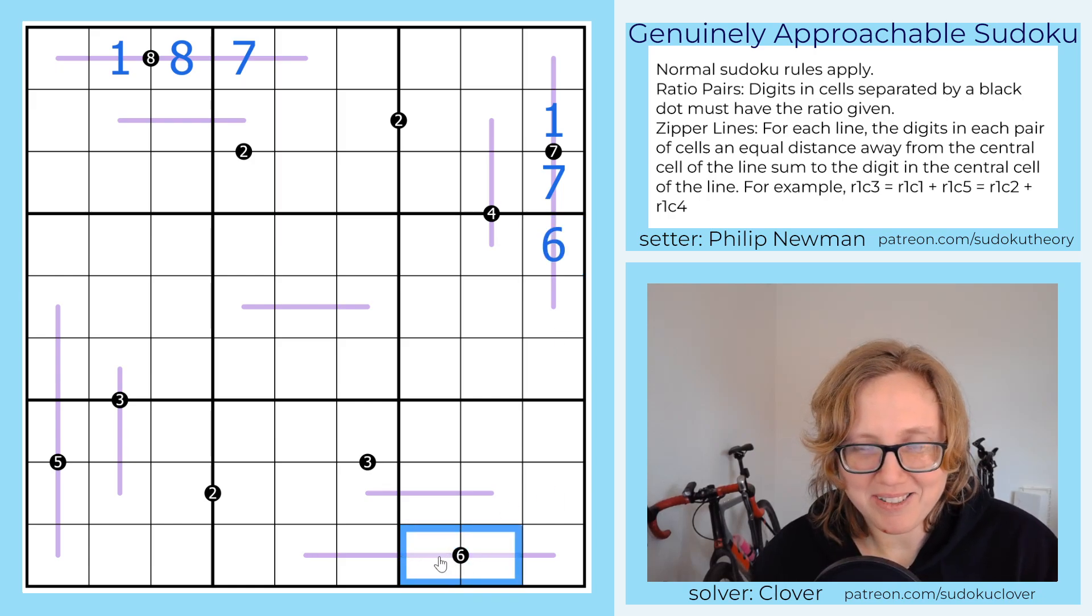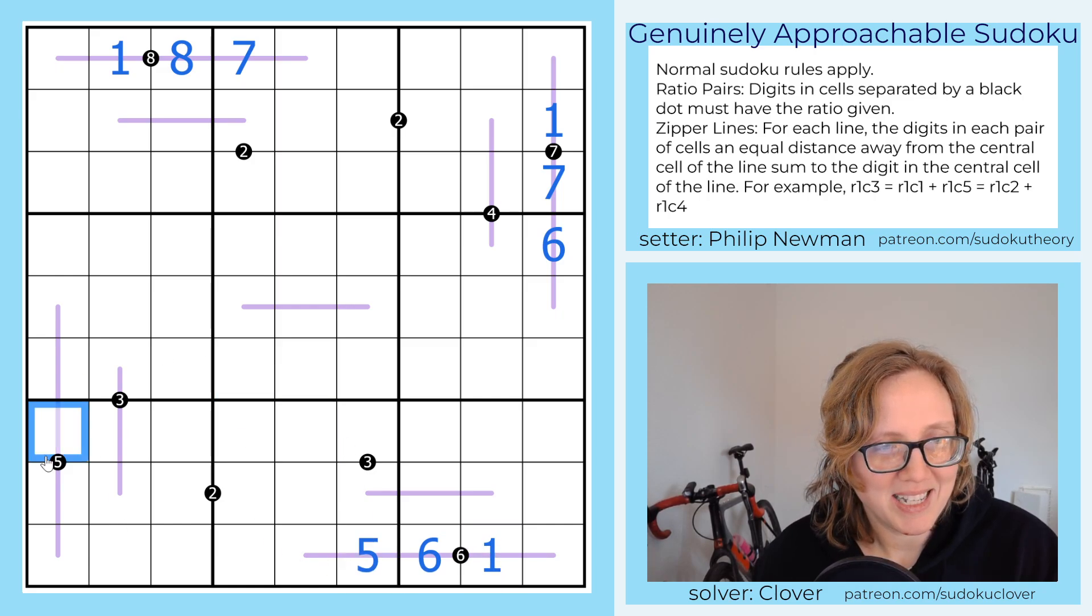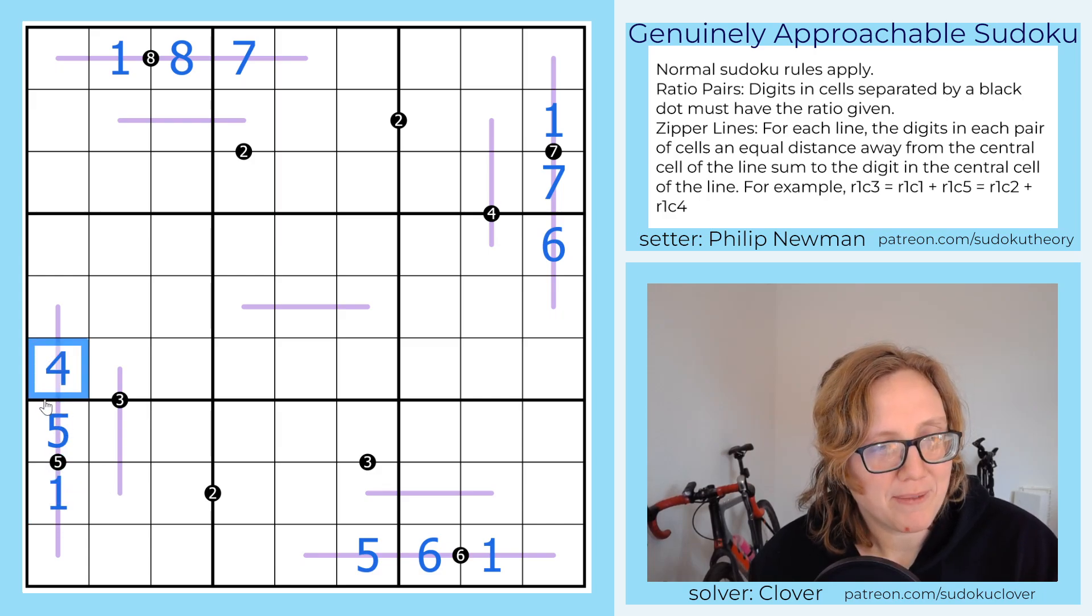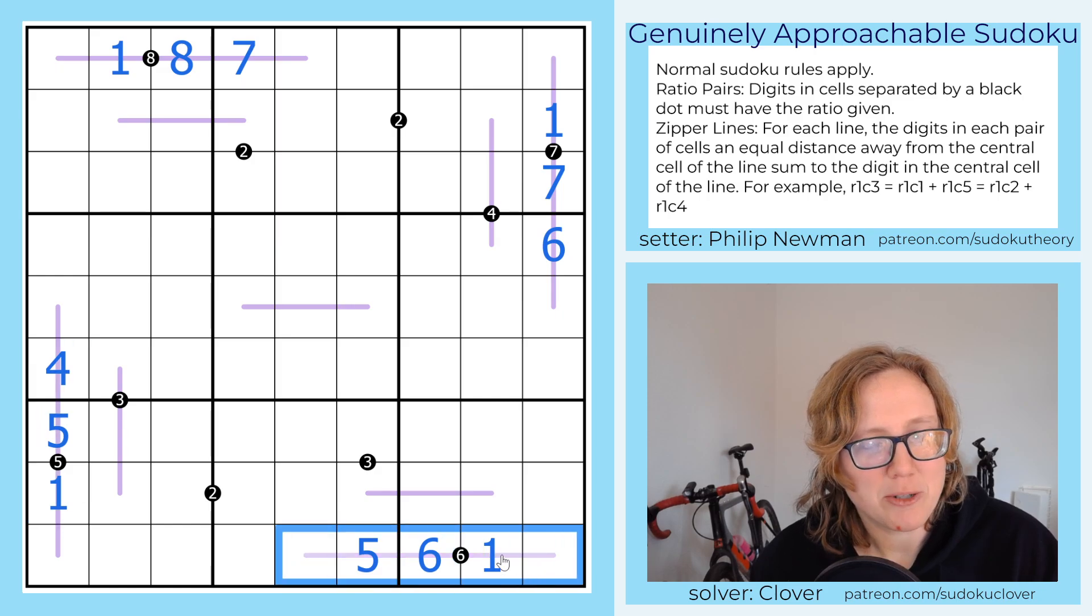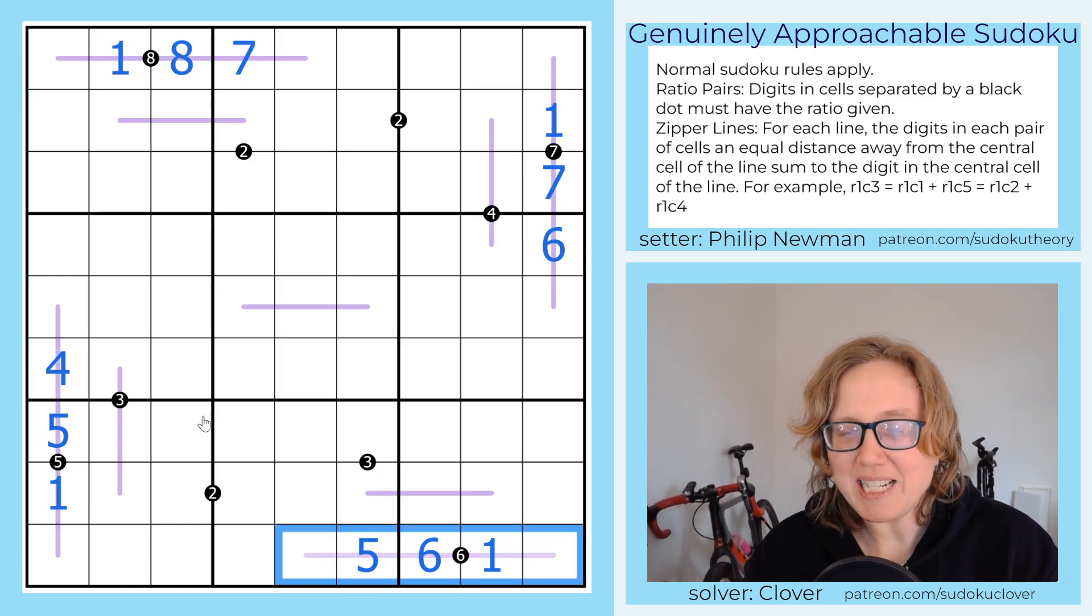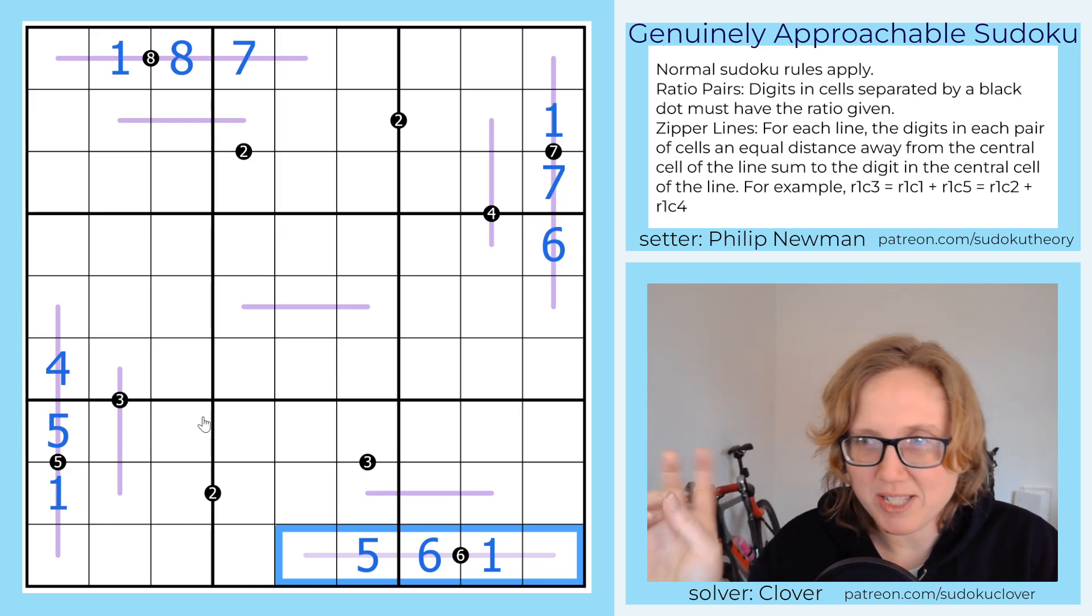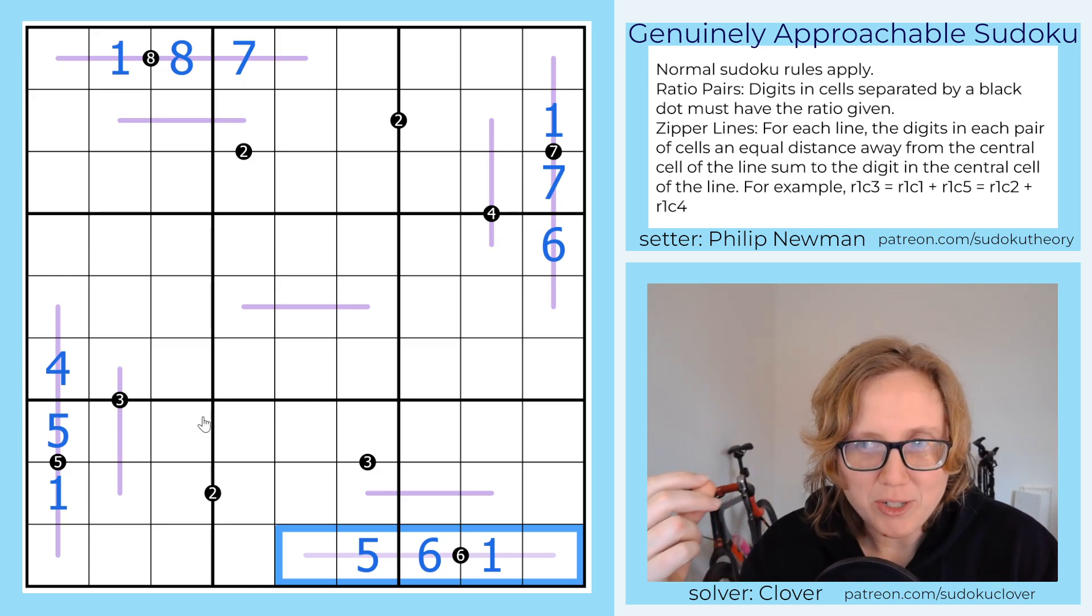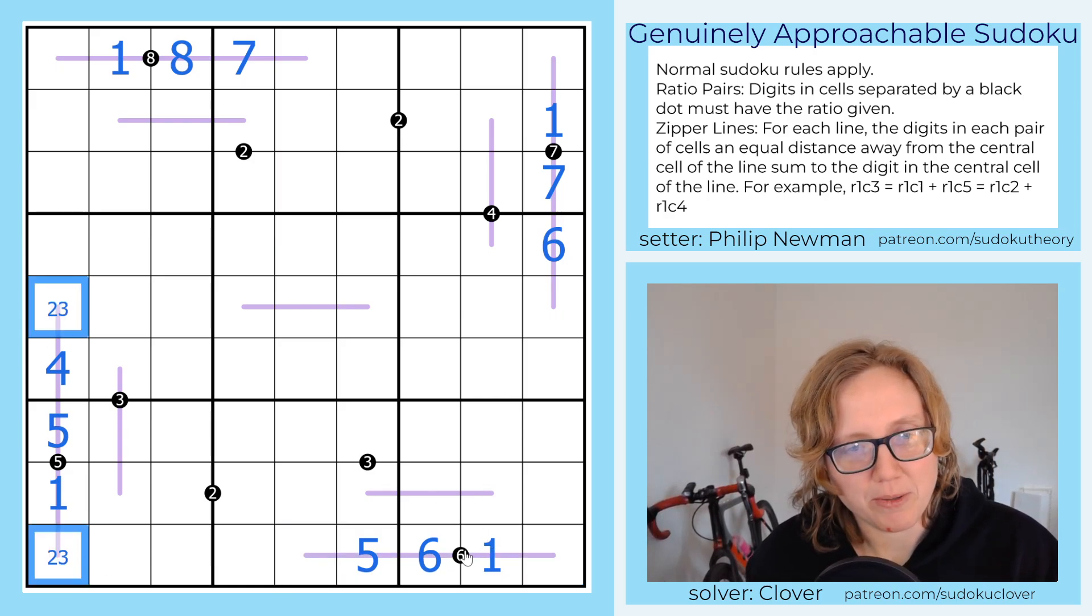Same deal here. This is 1 and 7. Philip is really working up a theme here. So for the same reason, that's going to be a 7, and that's going to be a 1. And now 7 is 1 plus 6, so let me place the 6. Exact same things happening here. This has to be 1 and 6 in this order. 1 plus 5 is 6. Finally, this has to be 1 and 5 in this order. 1 plus 4 is 5.